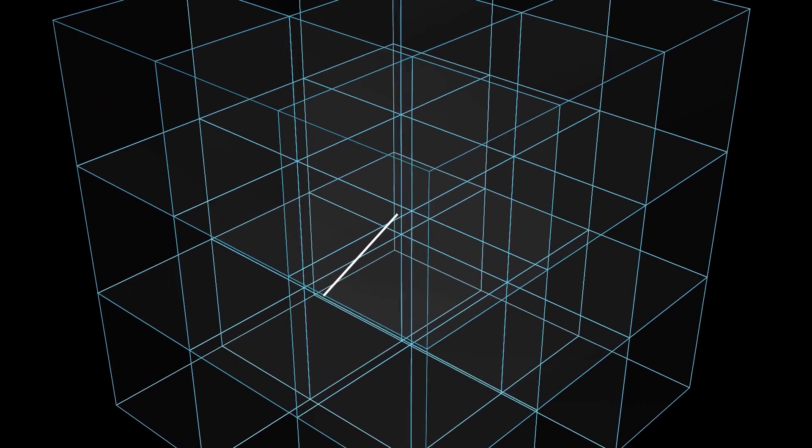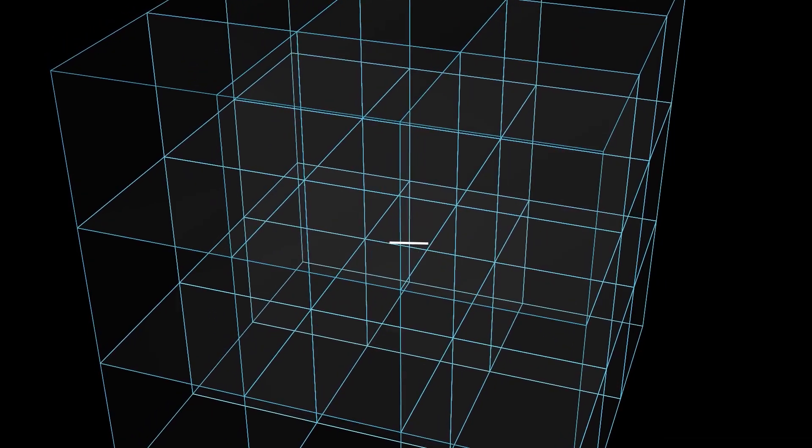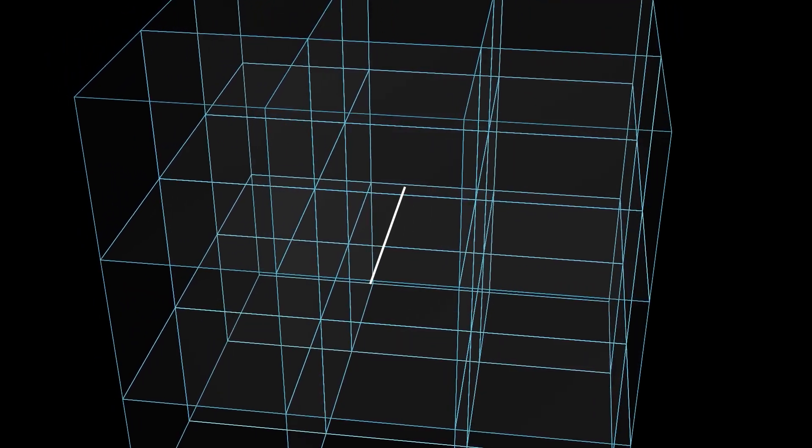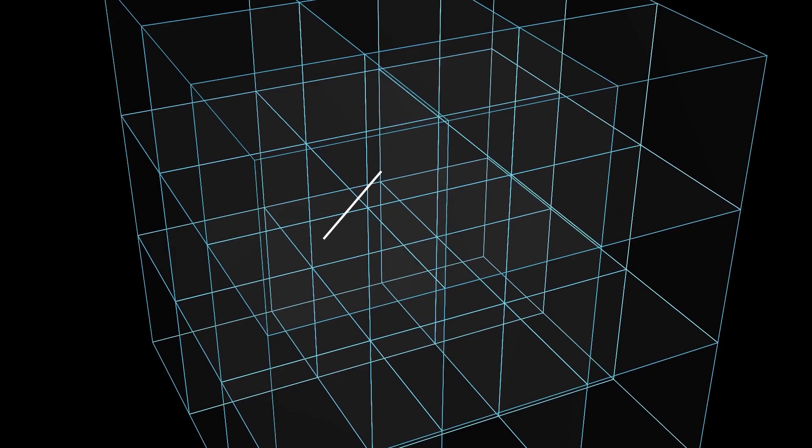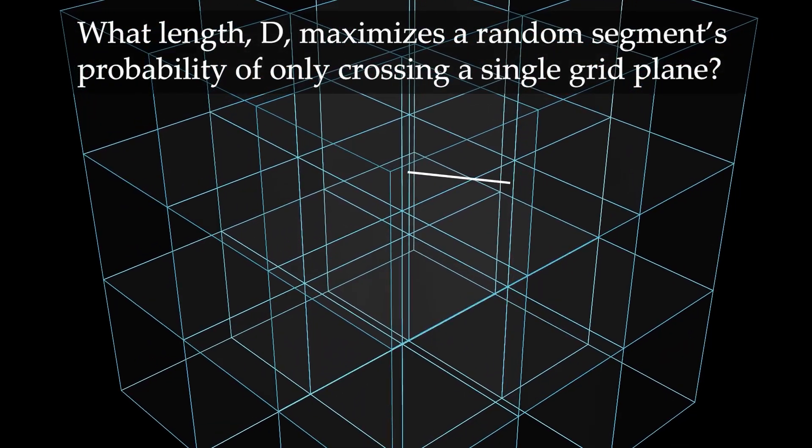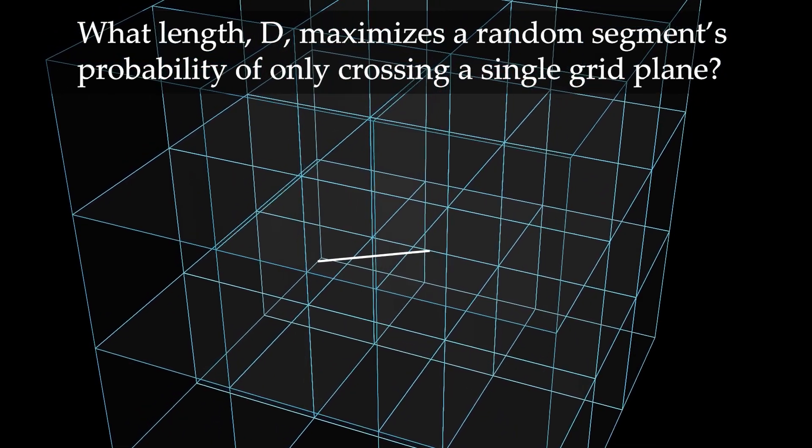As you've seen on the screen, this month's puzzle concerns a 3D unit lattice. We consider placing a line segment with length D in the grid with a random position and orientation. The objective of this puzzle is to find the length D that maximizes the probability that this randomly placed line segment only intersects with one of our grid planes.